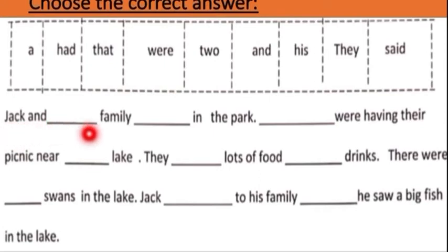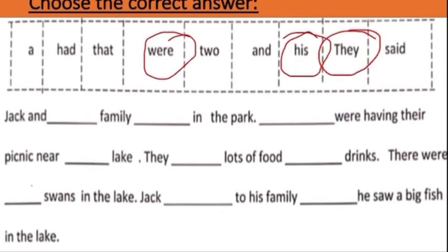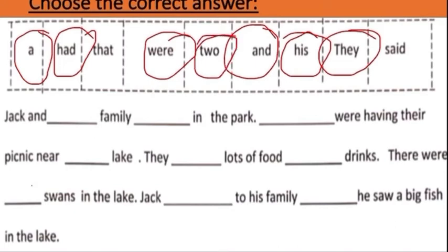First one. Jack and dash family in the park. So, what is the correct answer children? Jack and his family. Are or where? We don't have are here. So, we are going to use where in the park. Next is dash were having their picnic near the lake. So, what will be the answer? Yes. They were having their picnic near a lake. They dash lots of food dash drinks. They had lots of food and drinks. There were dash swans in the lake. There were two swans in the lake.